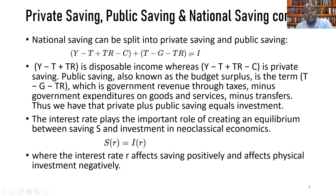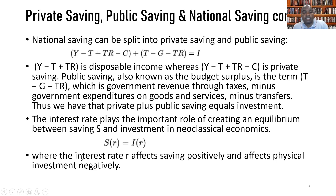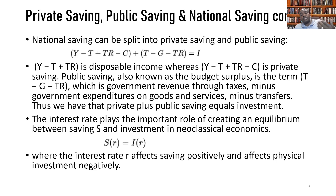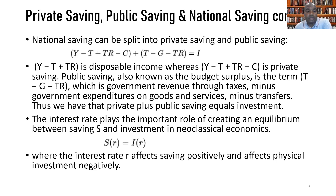From the equation, we gather that the sum of private saving and public saving equals investment in a simple economy. The interest rate plays an important role in bringing about equilibrium between savings and investment according to neoclassical economics. We expect a positive relationship between savings and the interest rate, and an inverse relationship between investment and the interest rate, as it serves as the opportunity cost of financial capital.